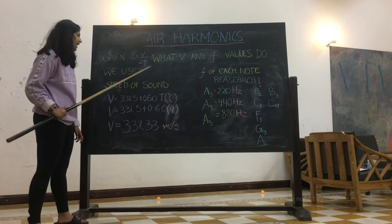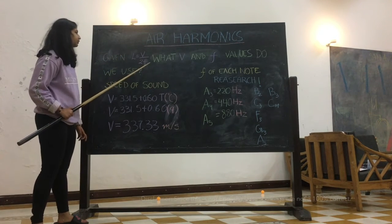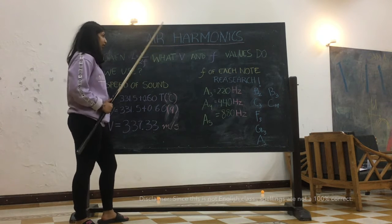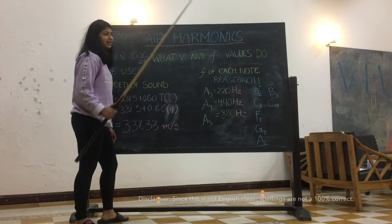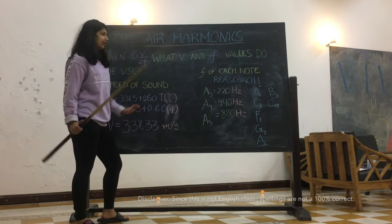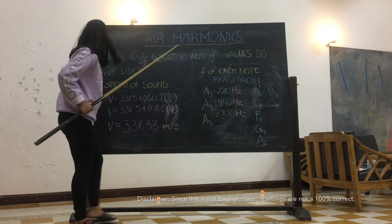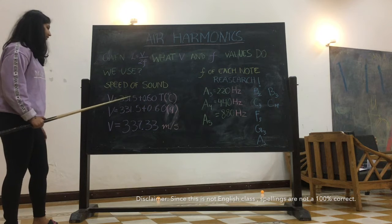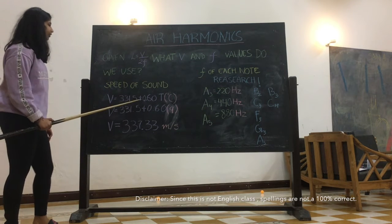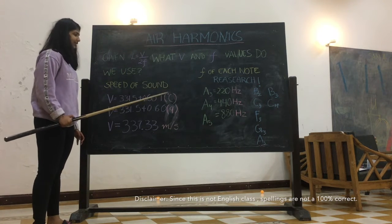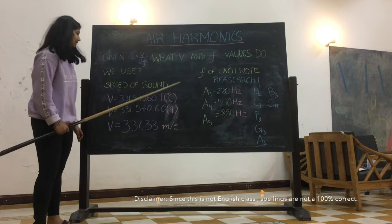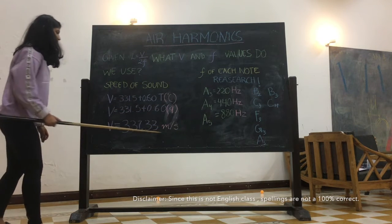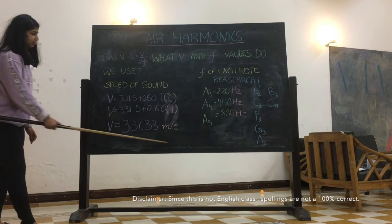So the question is: what values do we use for v and f? We did some research and found out that the equation for the speed of sound is v = 331.5 + 0.6T (where T is temperature in Celsius), and that is the speed value we're supposed to use.